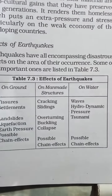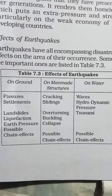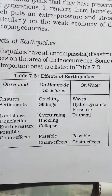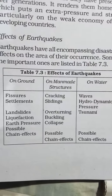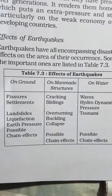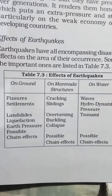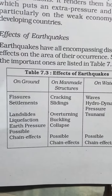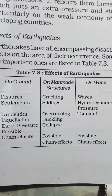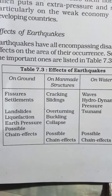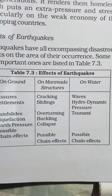The effects of earthquakes on the ground include fissures, settlements, landslides, liquefaction, earth pressure, and possible chain effects. On man-made structures: cracking, sliding, overturning, buckling, collapse, and possible chain effects. On water: waves, hydrodynamic pressure, tsunami, and possible chain effects.